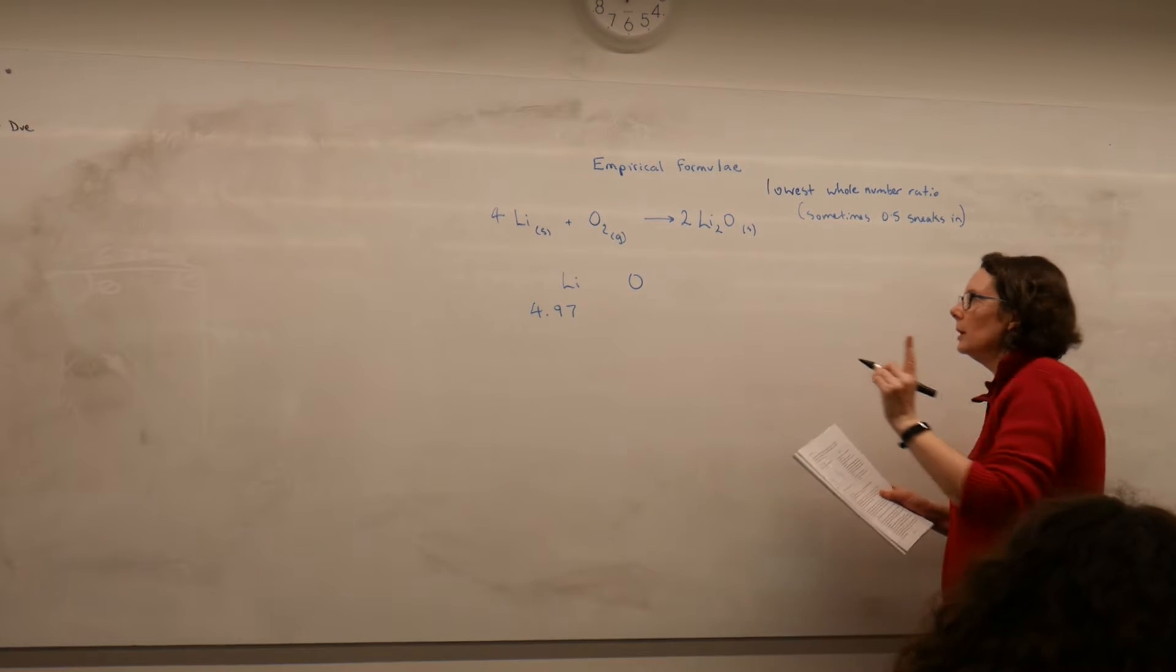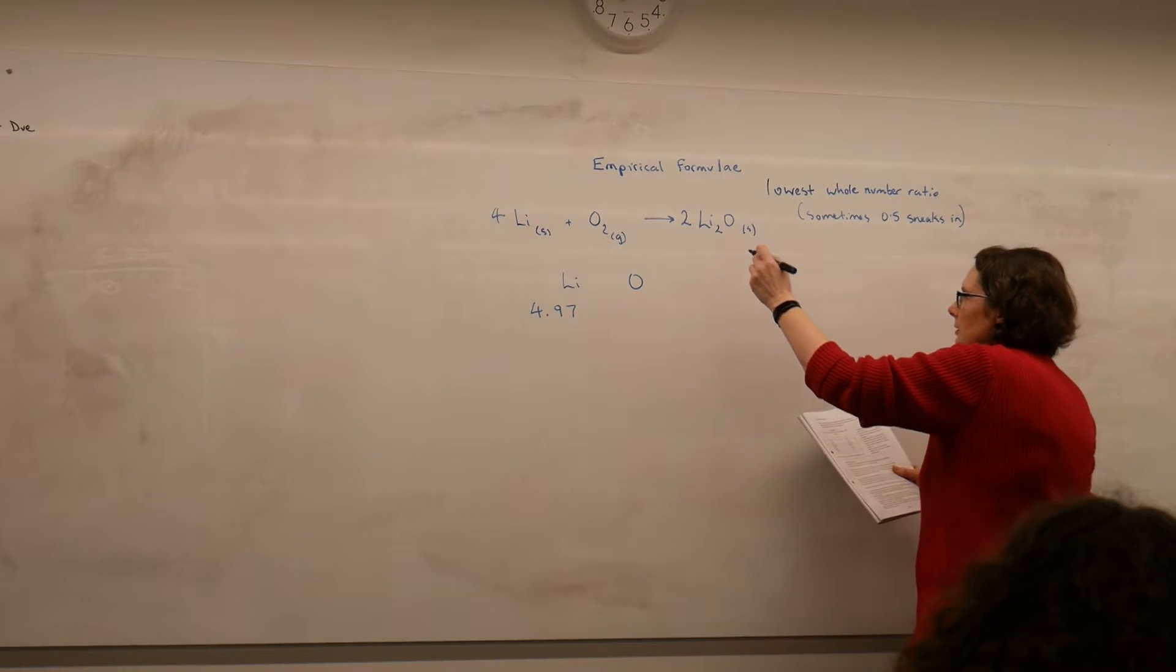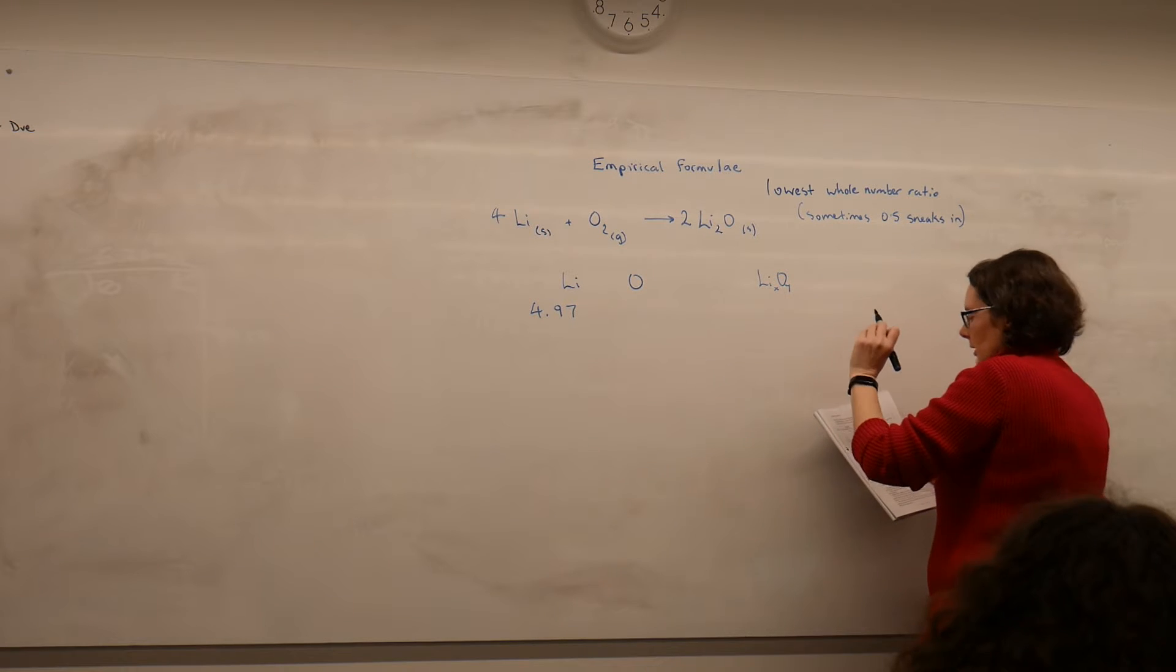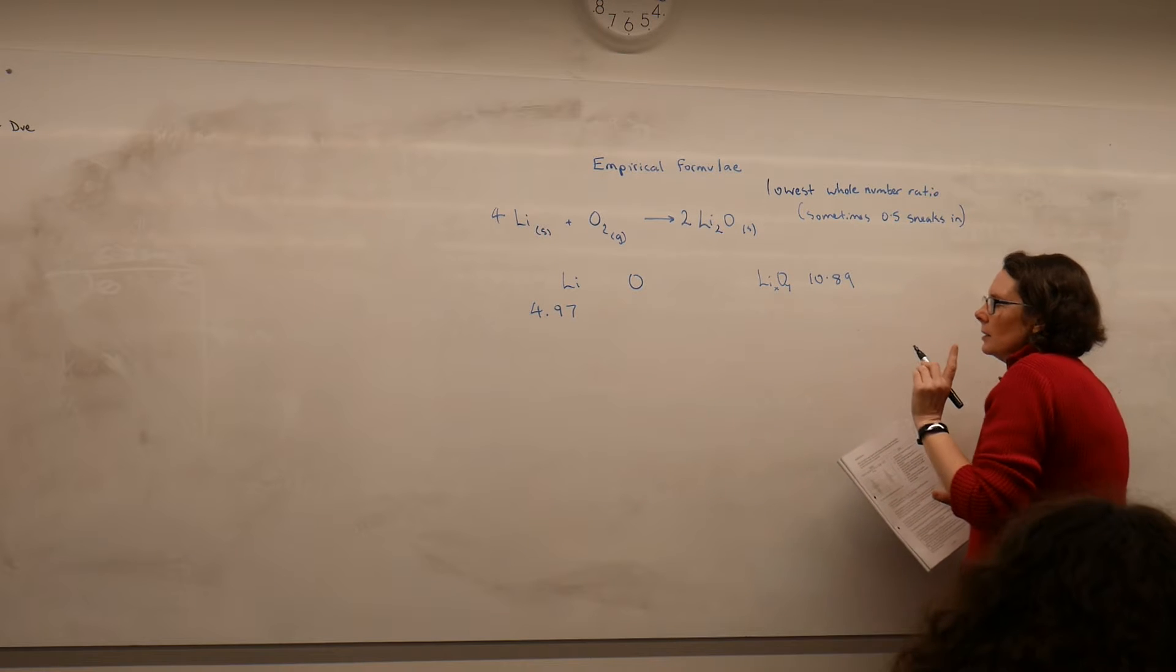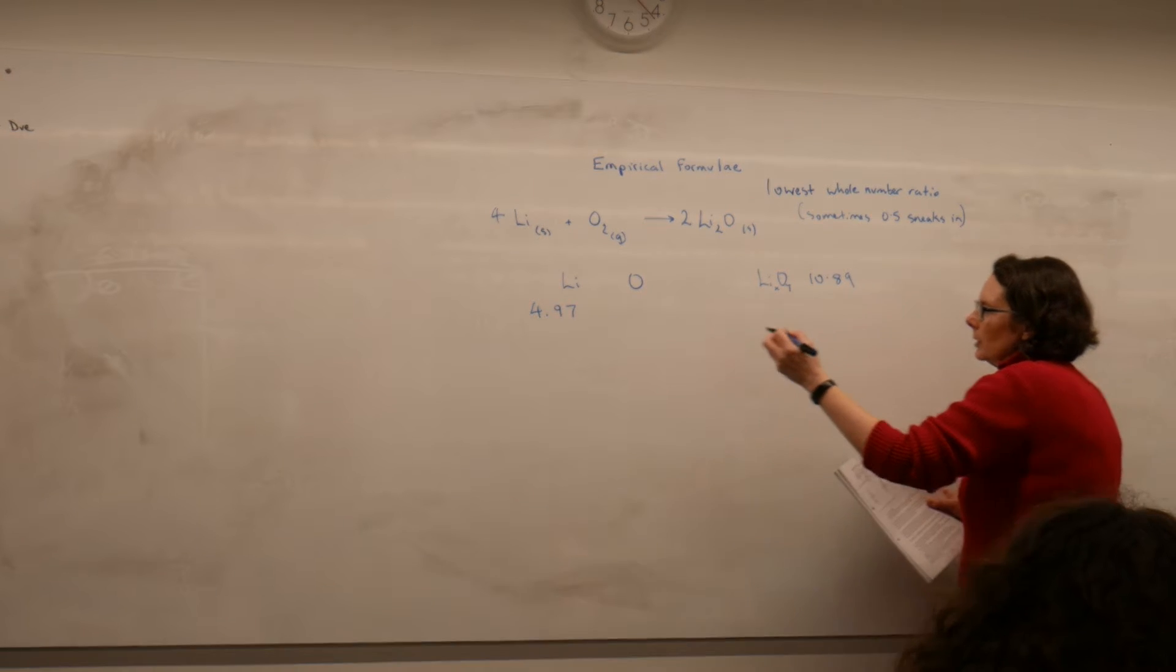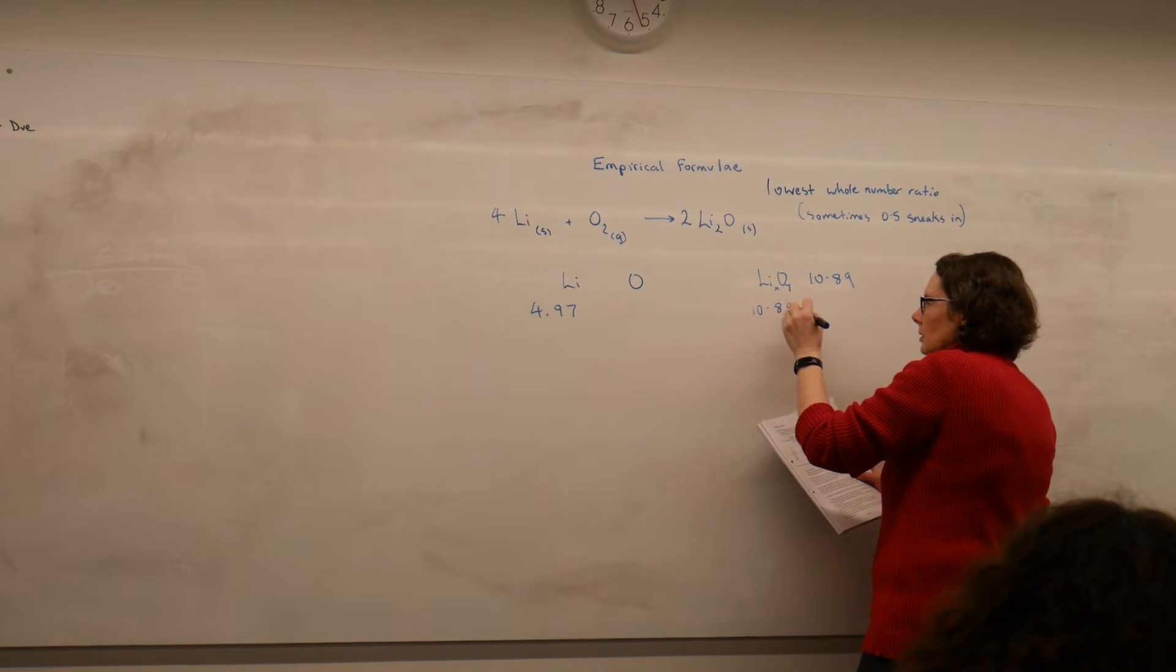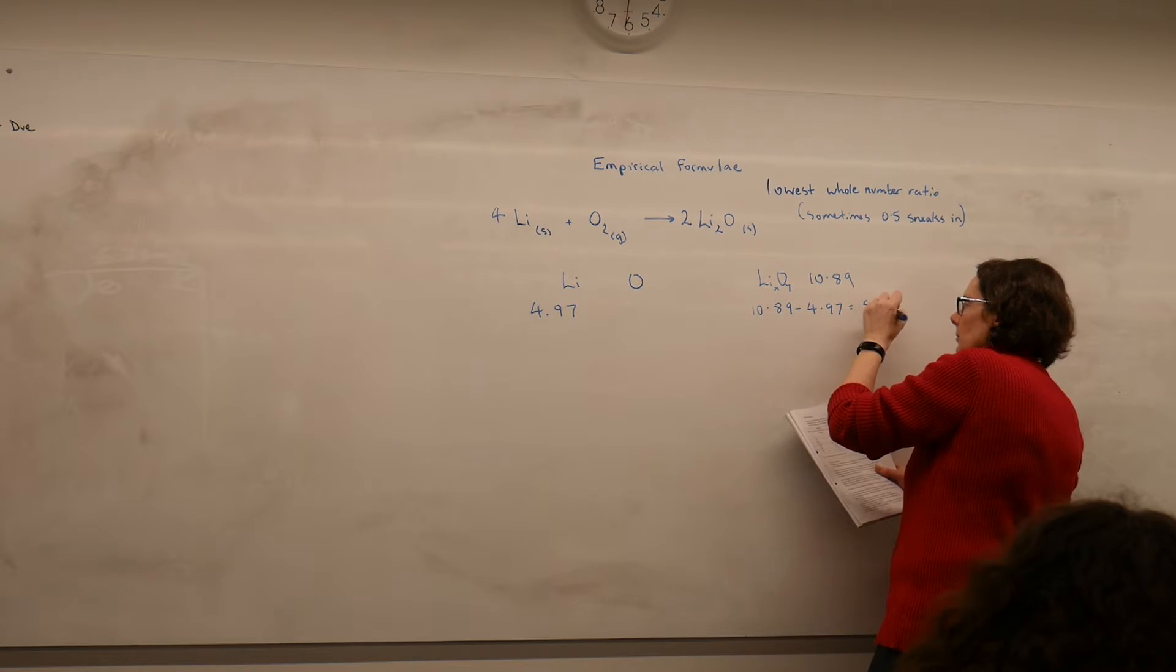And then after our reaction, our lithium oxide compound had a mass of 10.89. So therefore the oxygen present in the lithium oxide must be 10.89 minus 4.97, which is 5.92 grams.